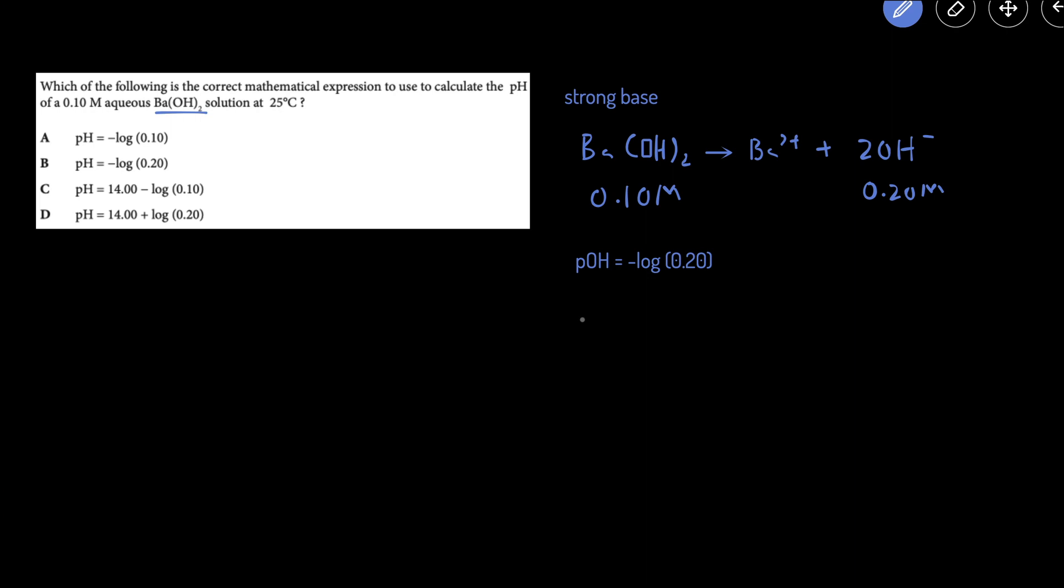And then to get the pH, well pH plus pOH is equal to 14, so then pH is going to equal 14 minus the pOH, which we determined was negative log of 0.2. So then that'll just be 14 plus log of 0.2. So the answer here is going to be D.